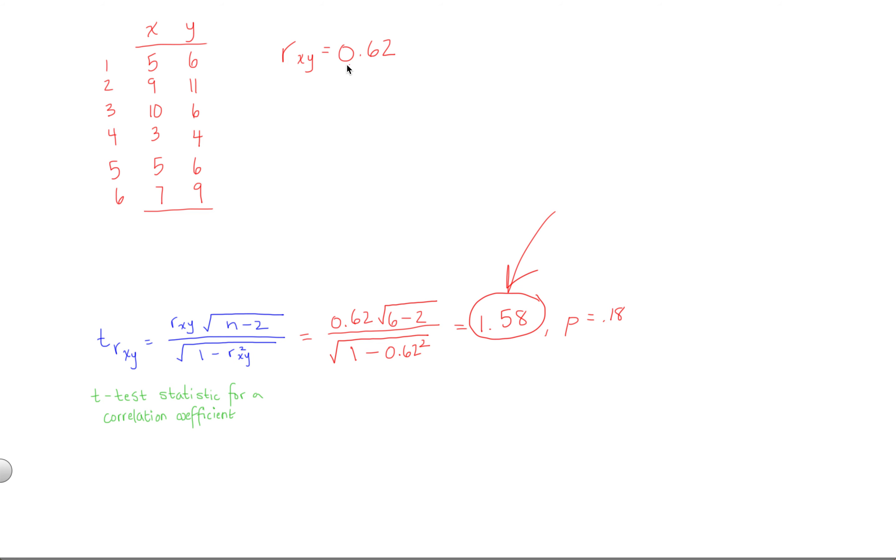So, if the correlation stayed the same at 0.62, but we had 100 people in our sample, n was 100, this numerator would be much larger, our t-test statistic would be much larger, and the p-value would definitely be less than 0.05. But, in any case, we're going to get rid of that for now because we have our t-test statistic.